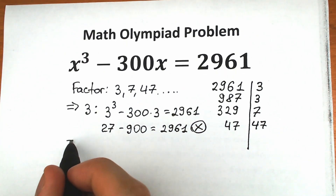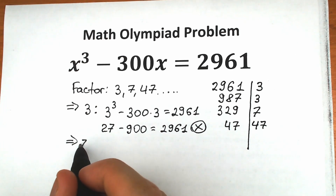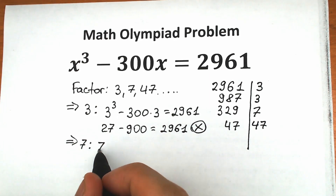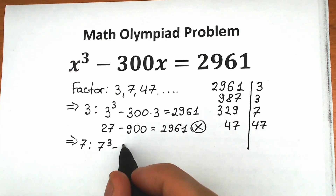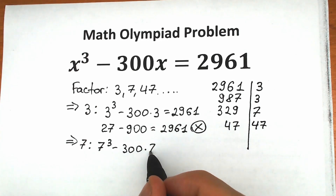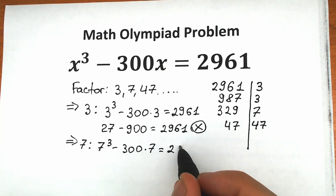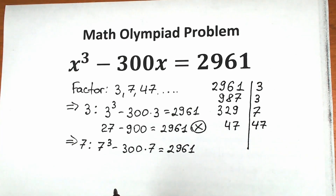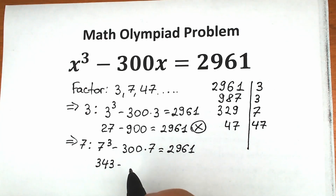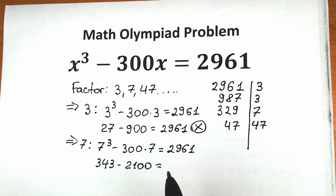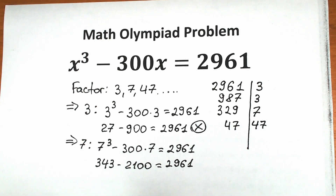Let's check the next factor, 7. So 7 cubed minus 300 times 7 equals 2,961? We get 343 minus 2,100 equals 2,961, which is obviously not correct. So we reject this root as well.